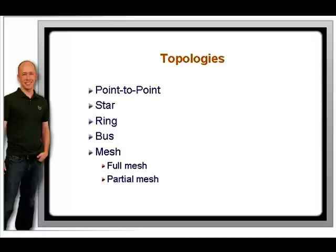A ring topology is created when one device is connected to the next one sequentially, with the last device being connected to the first. The actual devices don't necessarily form a circle, but the data moves in a logical circle. FDDI and token ring are examples of ring topologies. A bus topology uses a single coaxial cable to which hosts are attached at intervals. The term bus comes from an electrical bus, which is a point from which electrical power can be drawn from multiple connections. Ethernet that uses coaxial cable creates a bus topology.